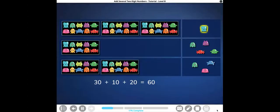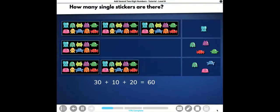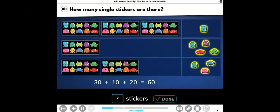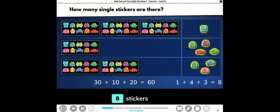Some of the stickers are single stickers. How many single stickers are there? So let's count them. This reminds me of the cubes using place value blocks. One, two, three, four, five, six, seven, eight. So I'm going to type in eight. Right-a-roo. There are eight single stickers.